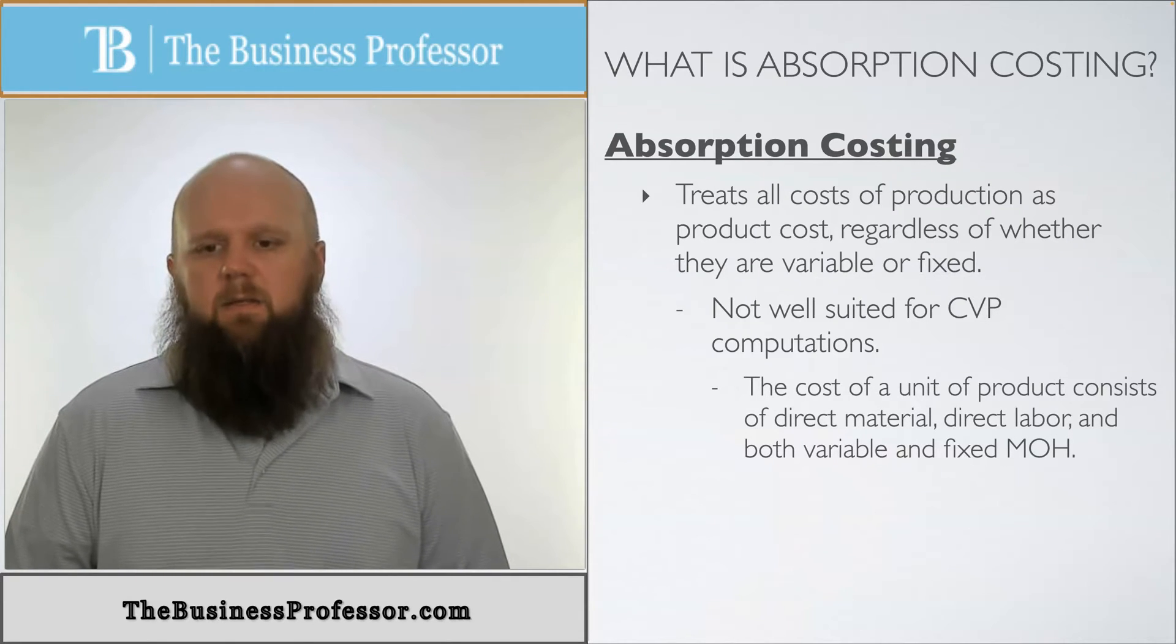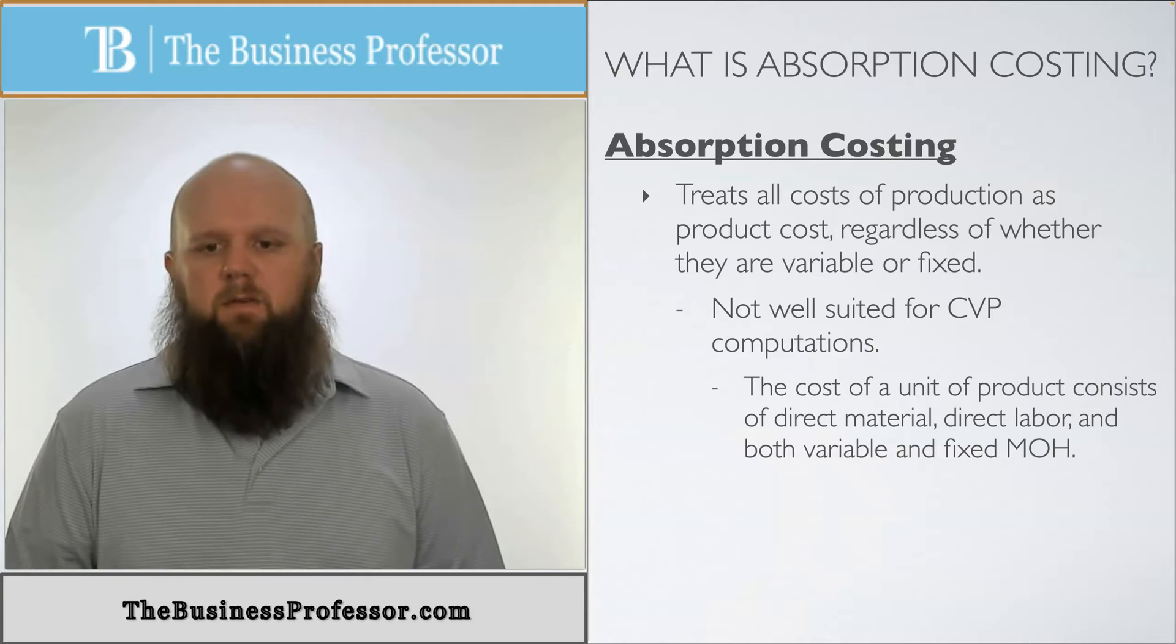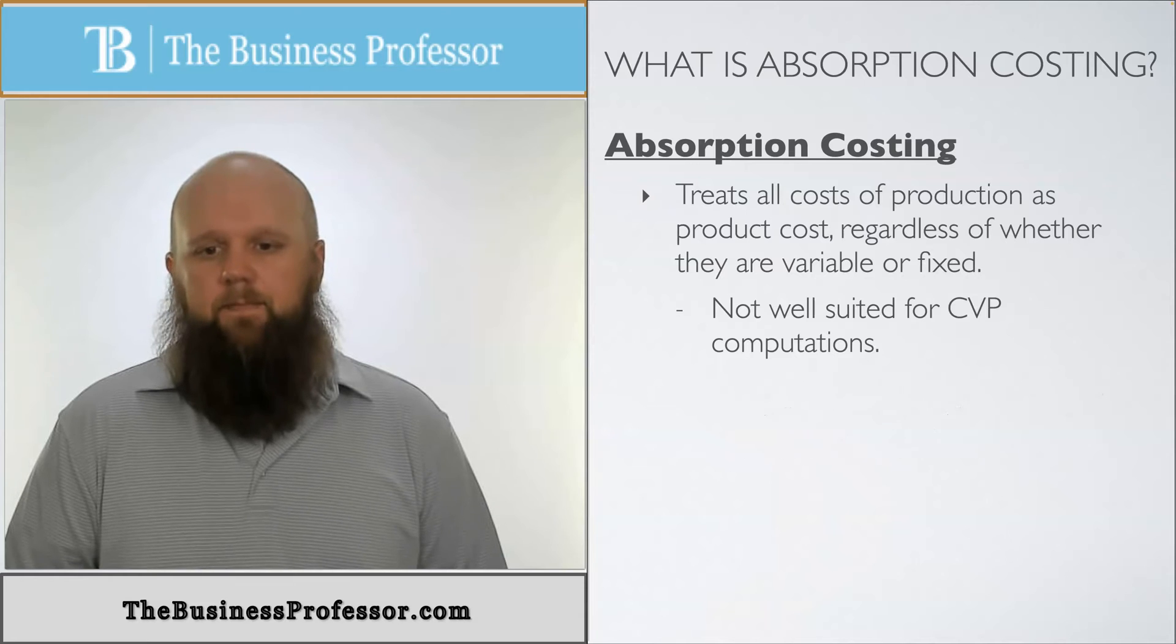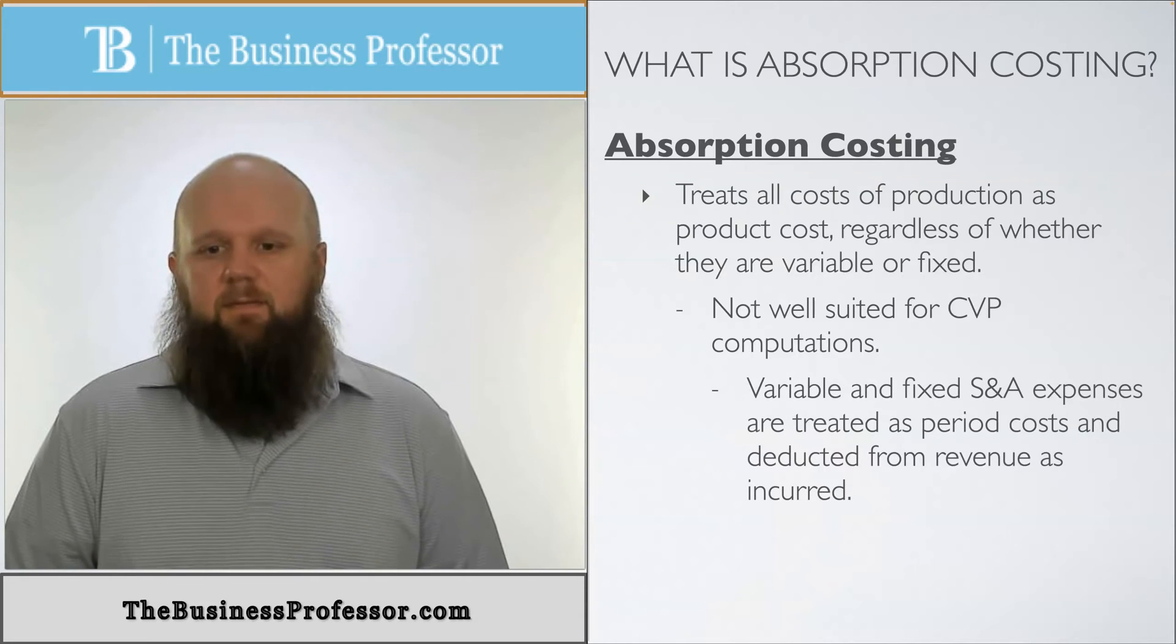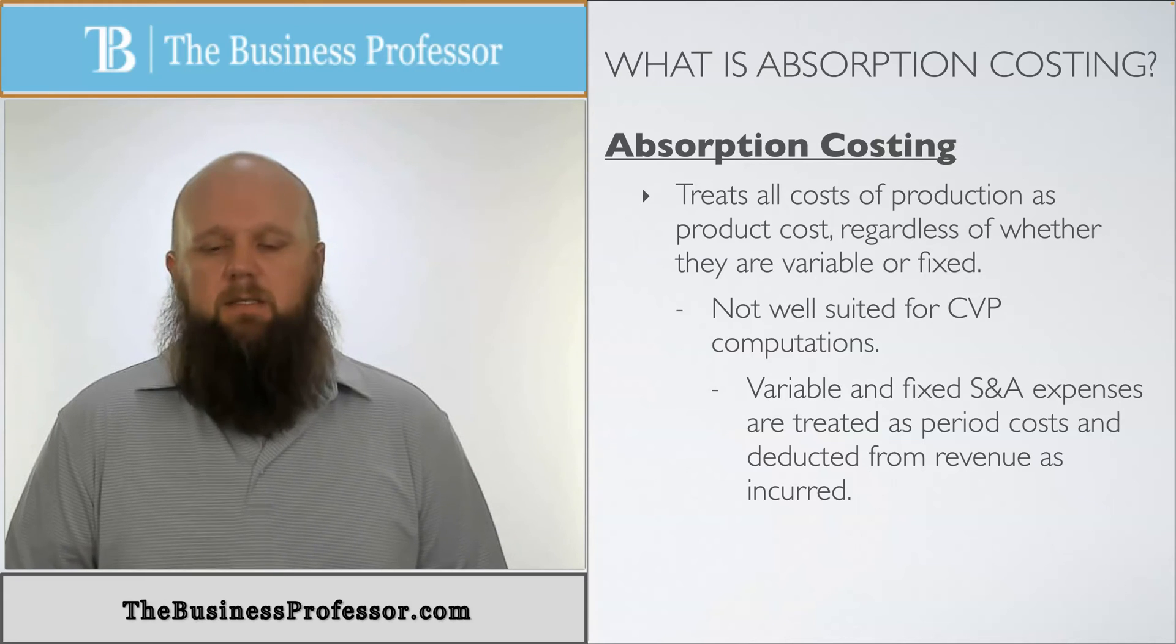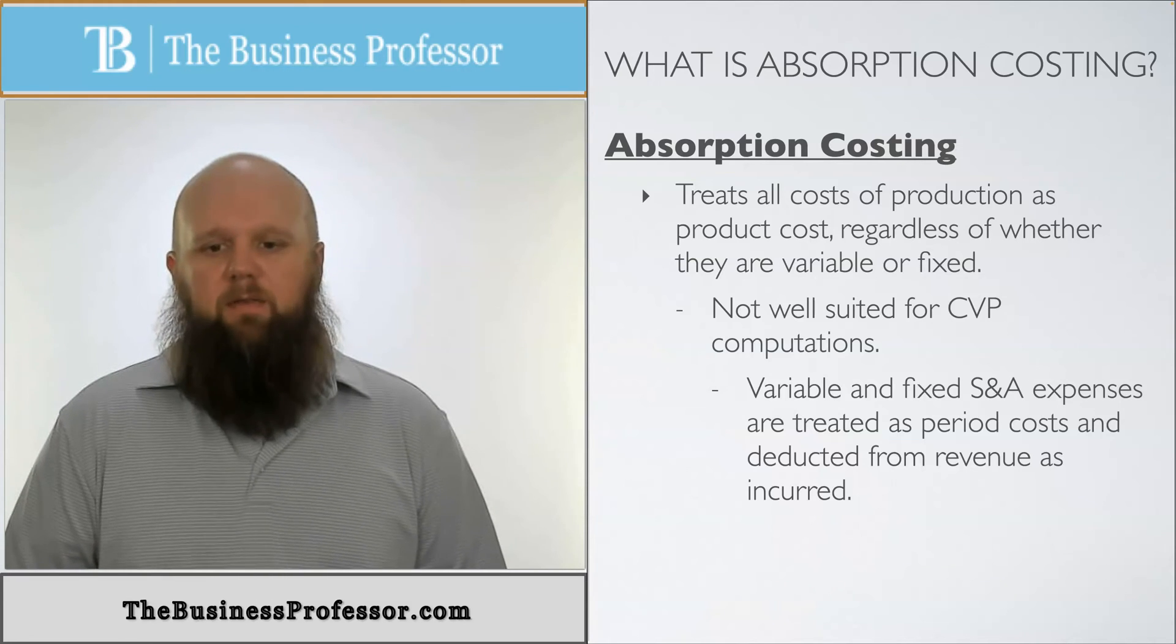The cost of a unit of product consists of direct material, direct labor, and both the variable and fixed manufacturing overhead. Variable and fixed S&A expenses are treated as period costs and are deducted from revenue as incurred.